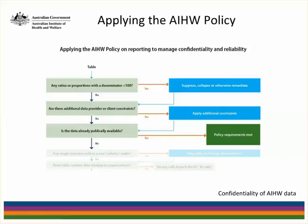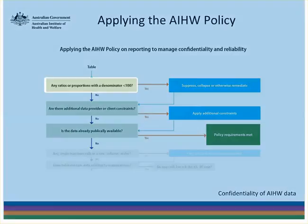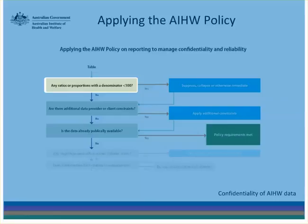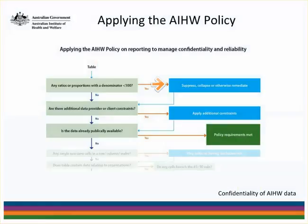Examining the table, the first question we ask is whether there are any ratios or proportions with a denominator of less than 100. This is not strictly speaking a confidentiality issue, but rather an issue of reliability and volatility. If any such ratios or proportions are found, then those cells are suppressed, collapsed, or otherwise remediated before we move on.